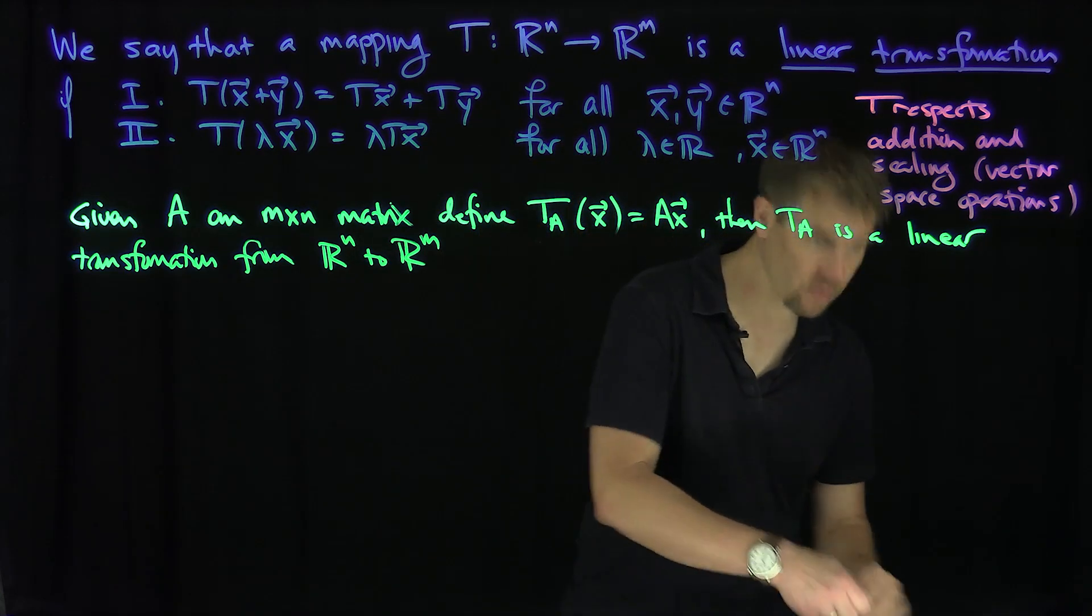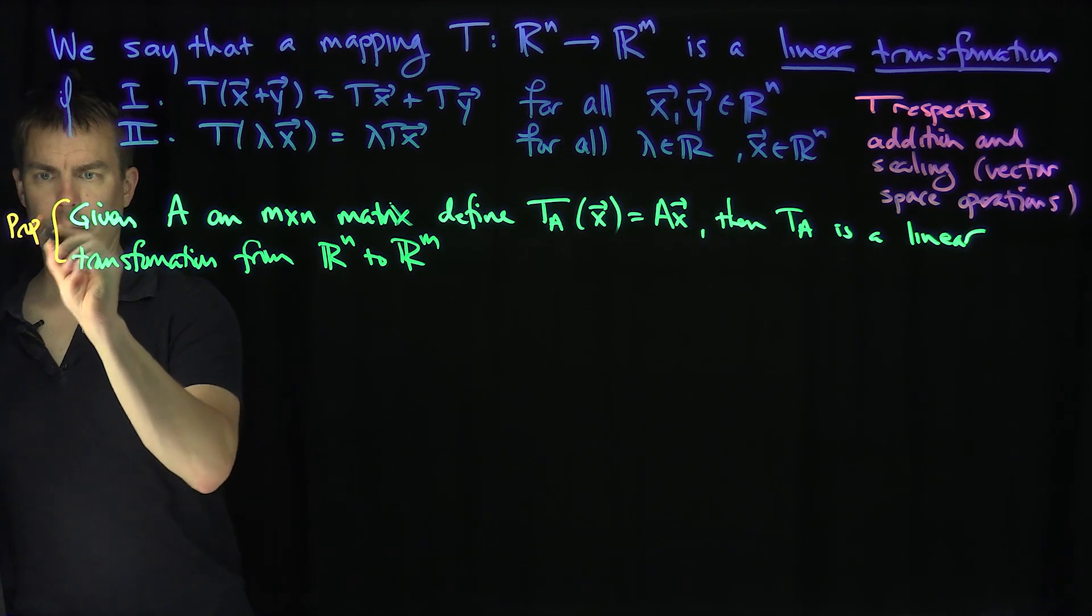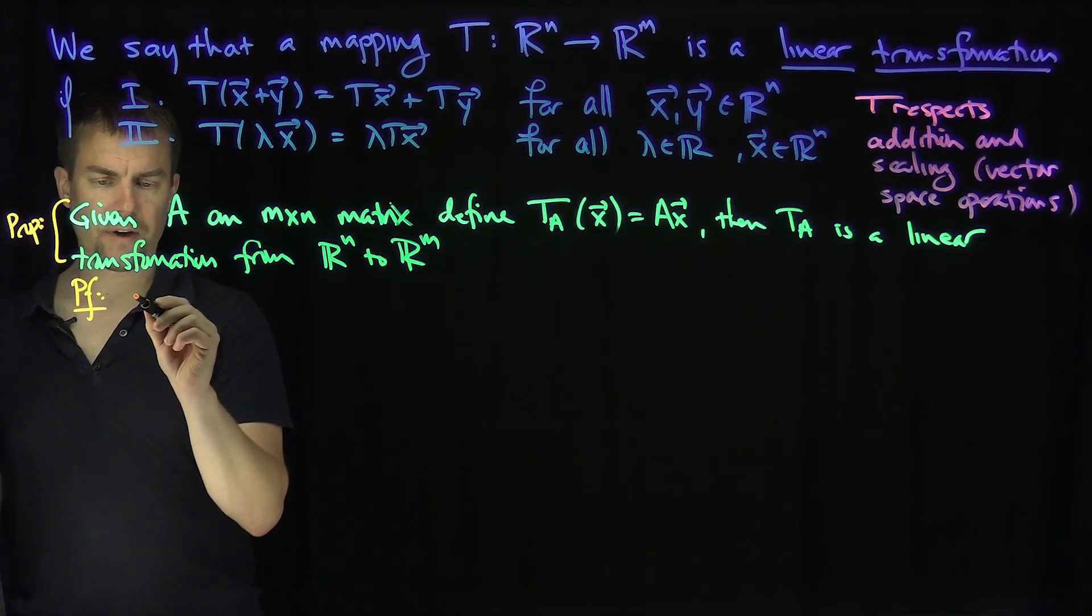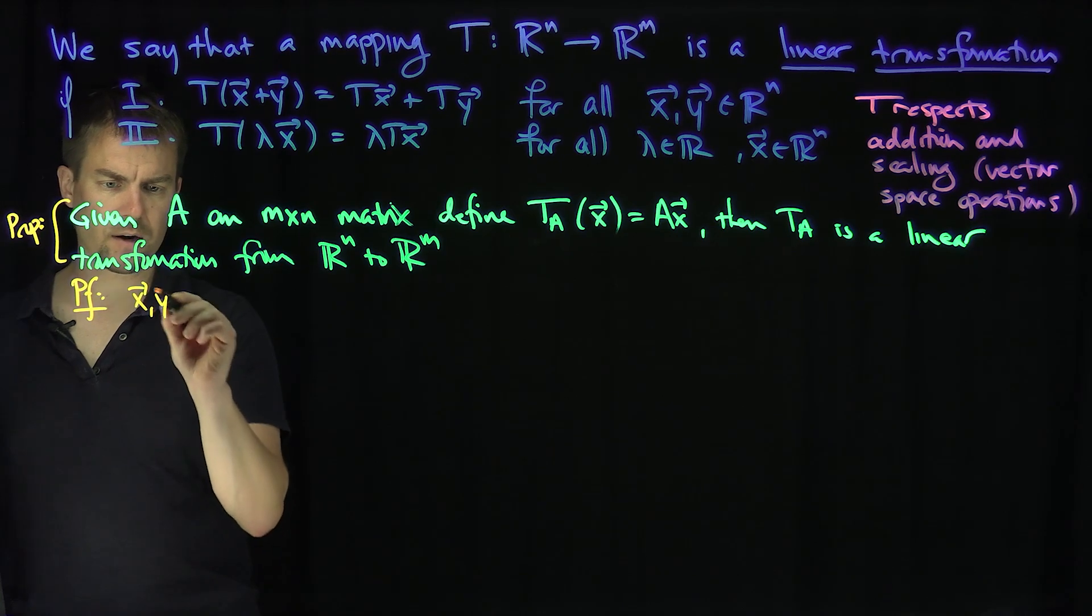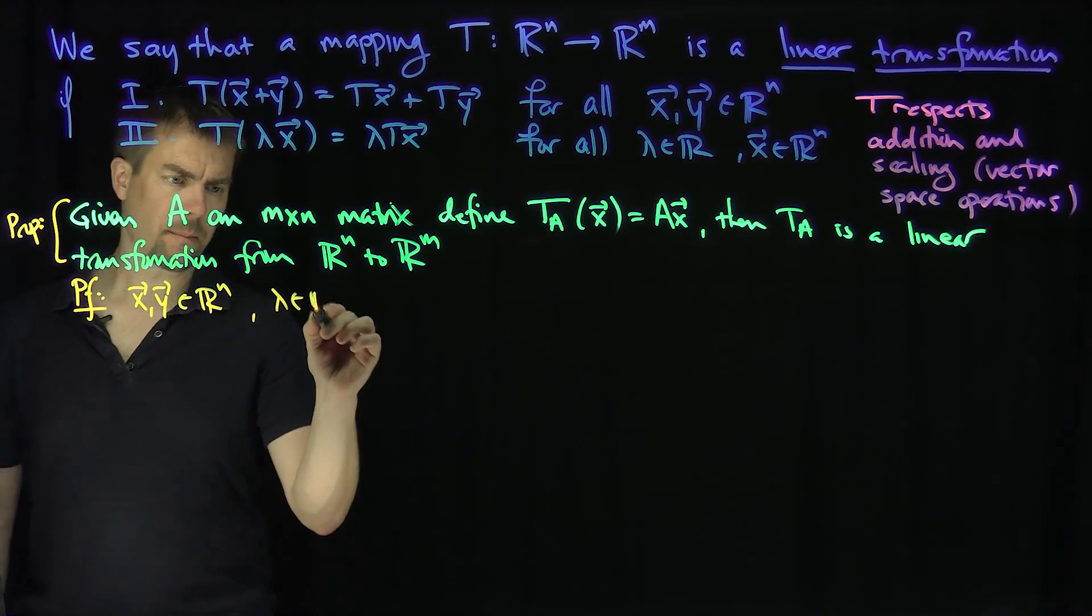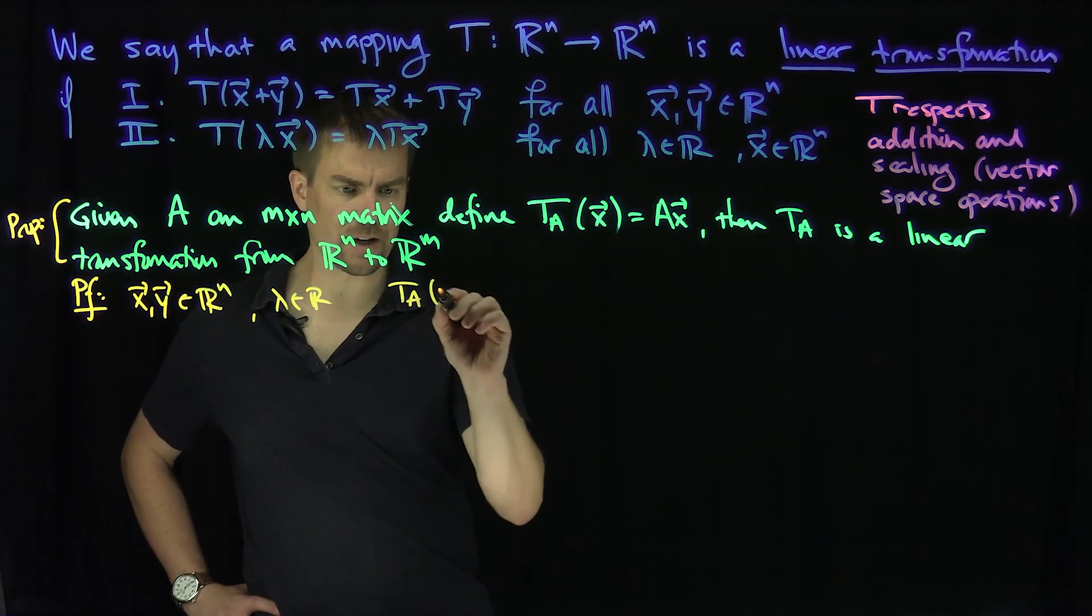So the proof is straightforward. Proof of this fact, we call this a proposition. And so here's the proof of that proposition. So if I have x and y in R^n and lambda real, then what can I say about T_A of x plus y?